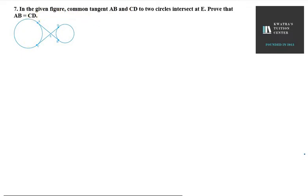In the given figure, common tangent AB and CD to two circles intersect at E. Prove that AB is equal to CD.